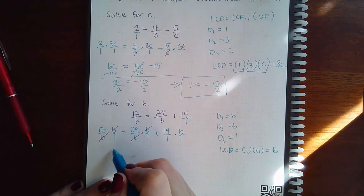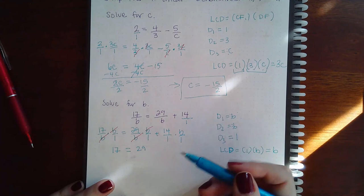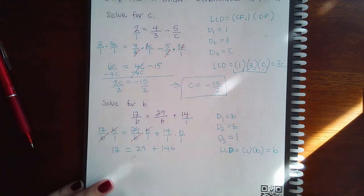So, all I'm left is 17 over 1, which is just 17. 29 over 1, which is just 29. And 14B over 1, which is just 14B.